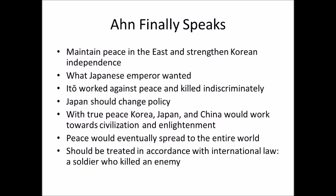Ahn presented Ito as working against peace and killing people indiscriminately. Now that Ahn had removed Ito, he had shown the world that Korea did not like what Ito was doing — that what Ito was doing was wrong. Ahn thought that Ito had tricked the Japanese emperor and was following his own policy. By revealing Ito's wrongdoing to the world, Japan now had the opportunity to change its policy. If Japan followed a policy that brought true peace between Korea, Japan, and China, that would allow them to become more enlightened, work together, become more civilized, and eventually this peace would spread to the entire world.